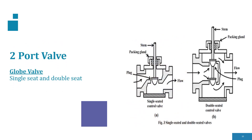A globe valve can be used for regulating flow or pressures as well as complete shut-off of flow. It may also be used as a pressure relief valve or as a check valve. Compared with a gate valve or ball valve, the globe valve has considerably higher pressure loss in the fully open position. Single-seated valves are one form of globe valve that are very common and simple in design.